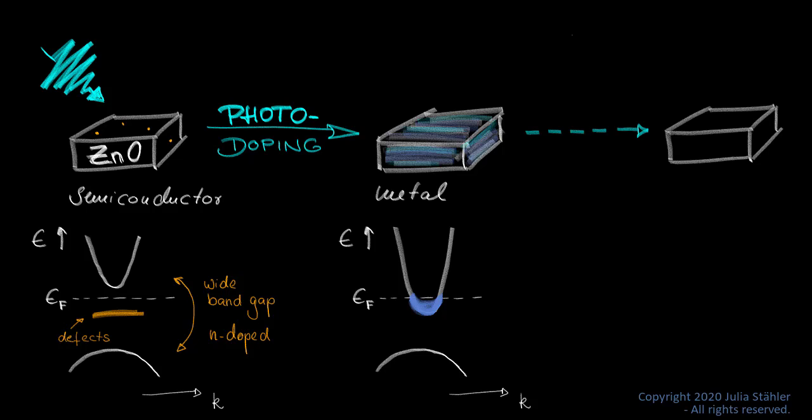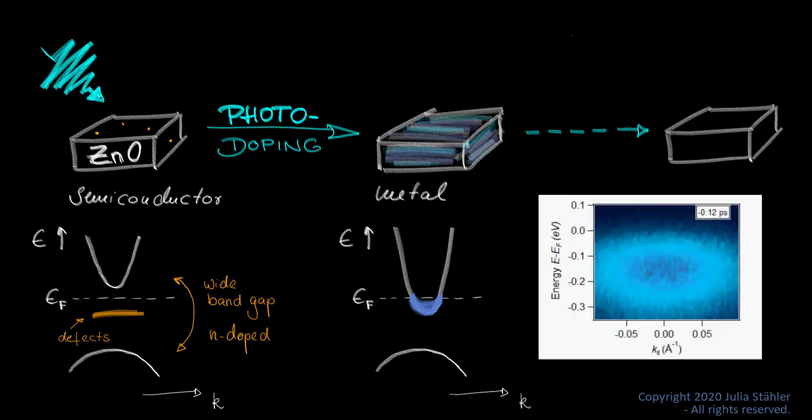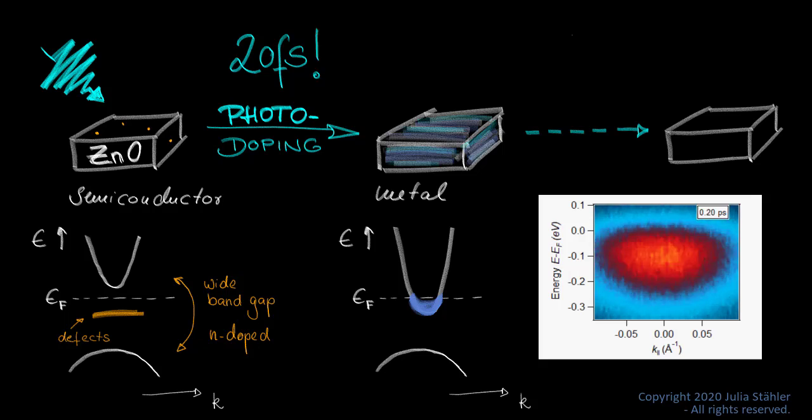This is an unambiguous proof of metallic zinc oxide. The ultra-fast metalization happens in only 20 femtoseconds after the optical excitation. It becomes stronger and stronger. Electrons delocalize. And then...